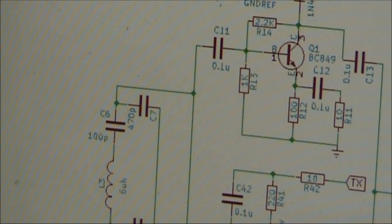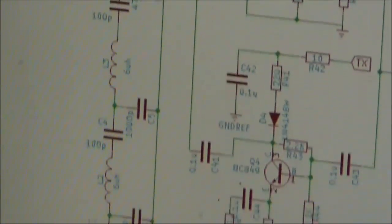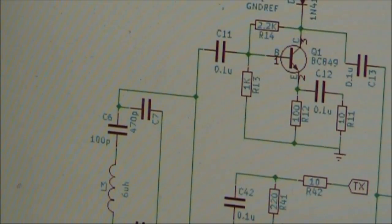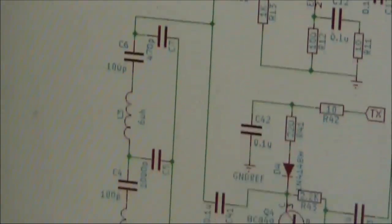The bandpass filter in the BitX is common to both receiver and transmitter. It comprises L3, L2 and L1. On transmit, the signal comes from the top end, L3 first.